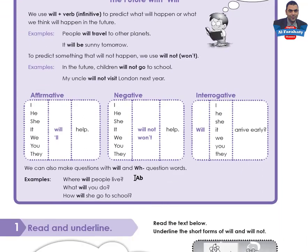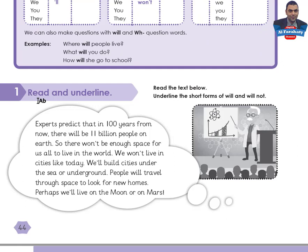Activity 1: Read and underline. Read the text below and underline the short forms of 'will' and 'will not'. Let me read first: 'Experts predict that in 100 years from now there will be 11 billion people on earth, so there won't be enough space for us all to live in. We won't want to live in cities like today. We'll build cities under the sea or underground.'